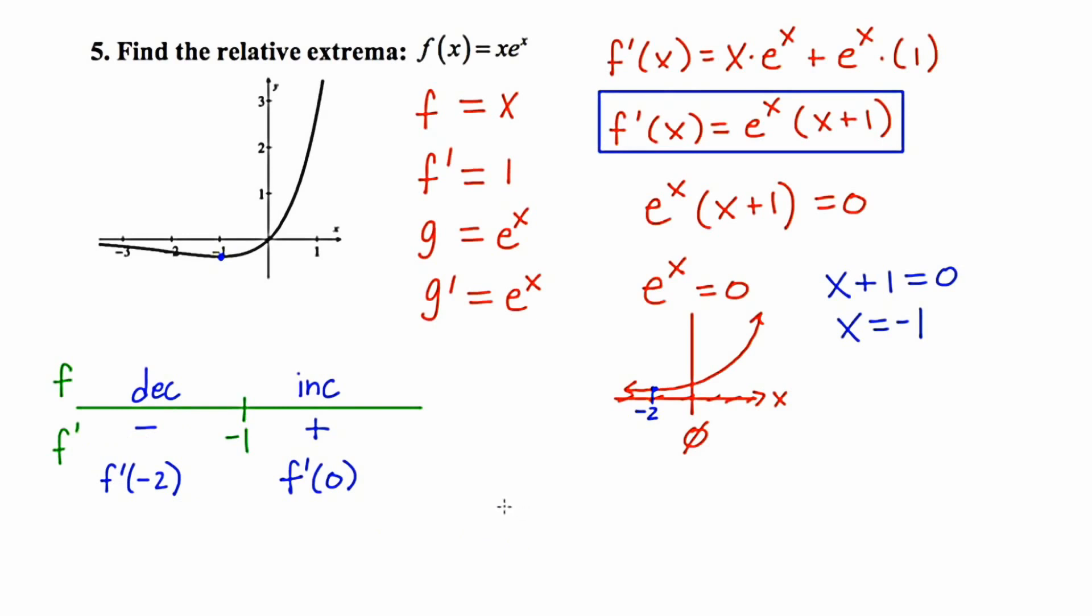So I'm going to go ahead and write that we have a relative minimum. And that occurs when x is negative 1. Now to figure out the corresponding y value, I'm going to plug it into the original function. So the original function, of course, is here.